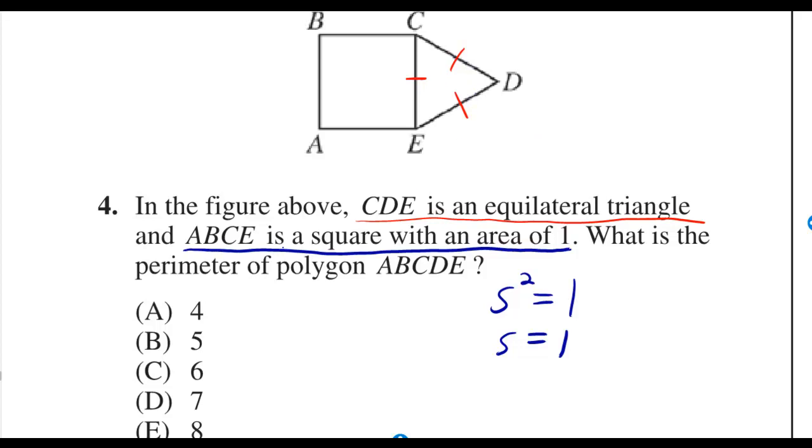By telling us ABCE is a square with an area of 1, I can write S squared is equal to 1, therefore S is equal to 1, therefore each one of these sides over here I can label 1.